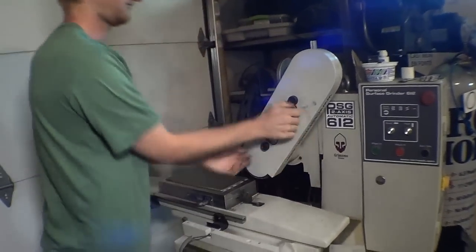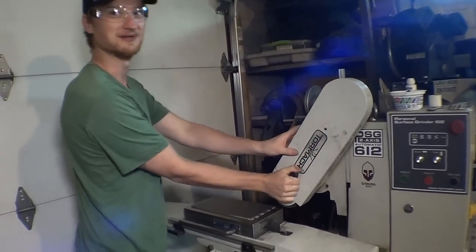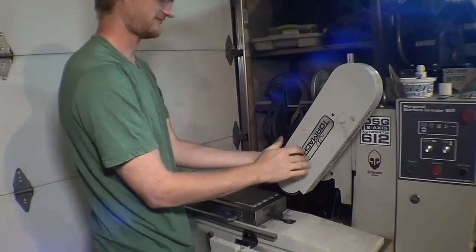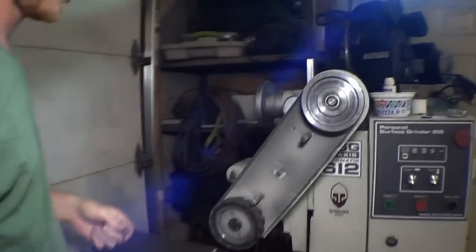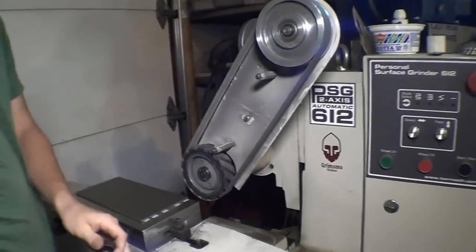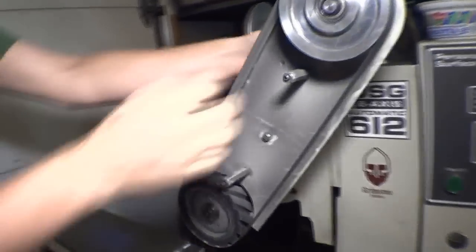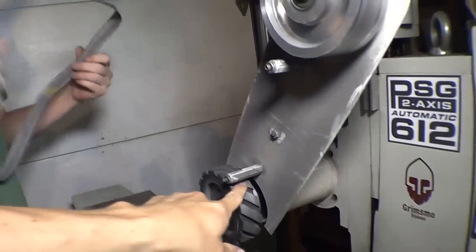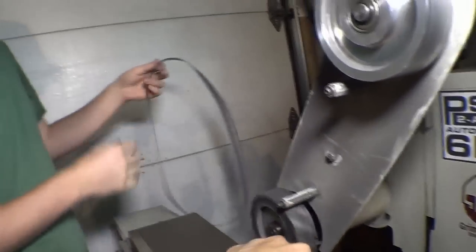So the question is, what belt are you going to use? Here's the belt attachment, 1 by 42. Comes with a serrated wheel. I think we might try to get a solid wheel, might give us a better surface finish.